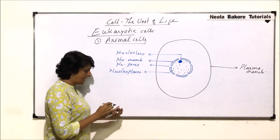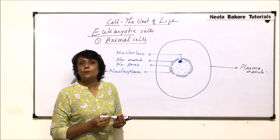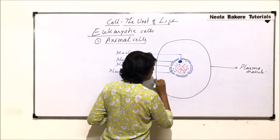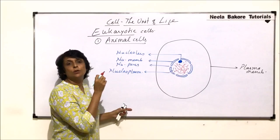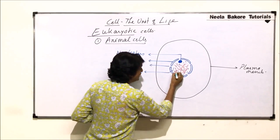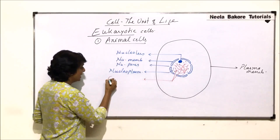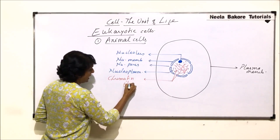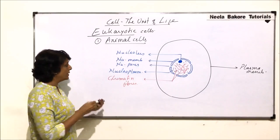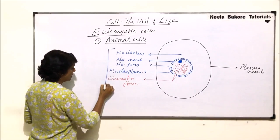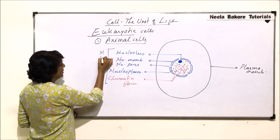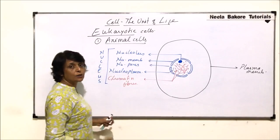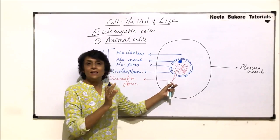In this nucleoplasm are present thread-like structures which are actually the genetic material strands, or the thinned-out chromosomes. These thread-like structures are known as chromatin fibers. All these things together make the nucleus, which is normally centrally placed.